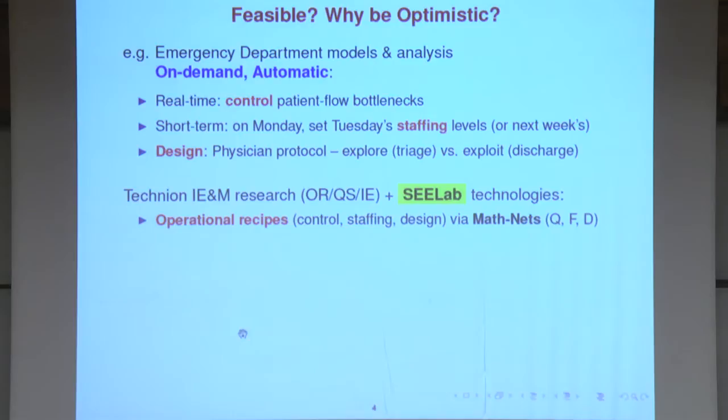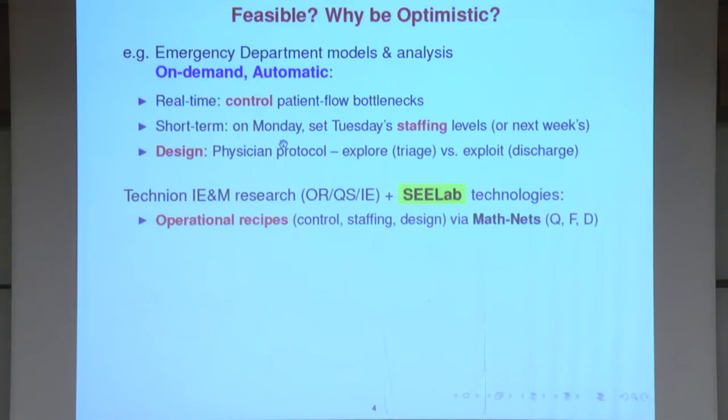That's a tall order. Take, for example, an emergency department. I create models and I'm able to analyze them, but I want to be able to generate these models for a specific emergency department on demand and automatically. This will allow me to control in real time patient flow or control bottlenecks. It will allow me in the short term to generate predictions — for example, of how many doctors are needed. So on Monday, based on all the data up to Monday, I should be able to predict how many doctors will be required on Tuesday.